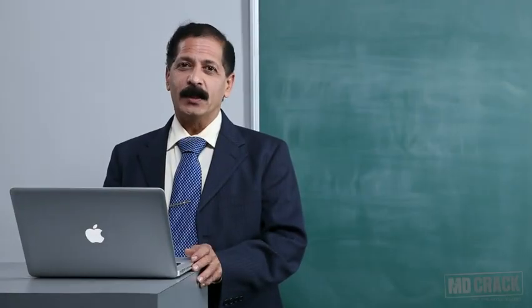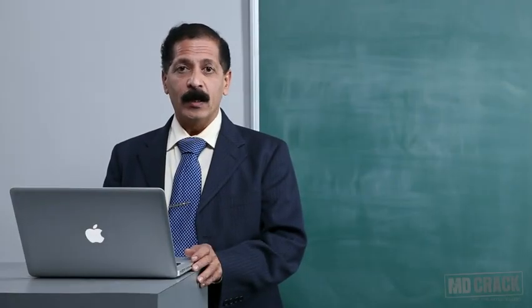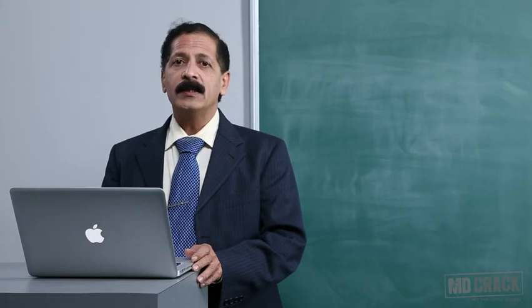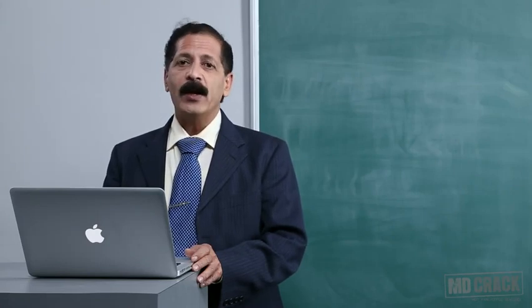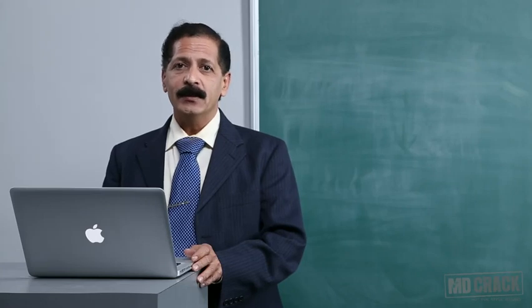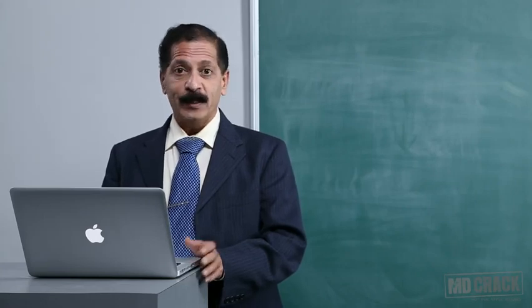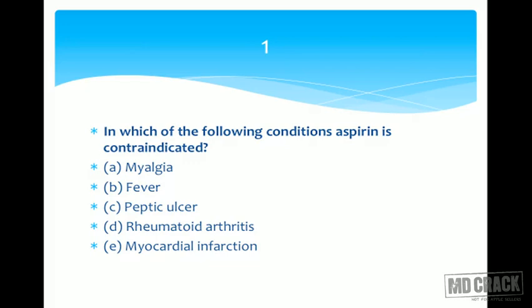Hello dear pharmacology students, welcome back. We are discussing multiple choice questions on pharmacology and entering a fresh new session of 10 questions. Let's begin. Question number one: in which of the following conditions is aspirin contraindicated? A is myalgia, B is fever, C is peptic ulcer, D is rheumatoid arthritis, and E is myocardial infarction.